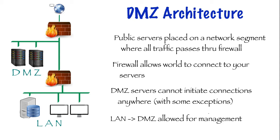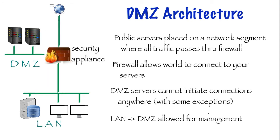If we have a web server in the DMZ, a web administrator is often modifying the content of the site and will need to access the server. Ideally the administrator would only connect from the WAN side to the server, but this is not always practical. The DMZ architecture shown here is usually not implemented exactly with two firewalls. Usually we have a single security appliance, such as OpenSense, that can provide firewall rules to create a DMZ. Technically having two separate firewalls is a bit more secure, but this architecture meets most small business needs.